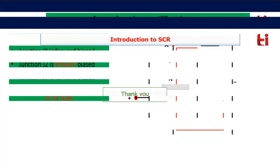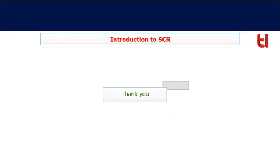Today we discussed the history of semiconductor devices and how a thyristor comes into conduction state by applying a positive gate supply. In the next class, we will discuss the voltage-current characteristics of SCR. Thank you.